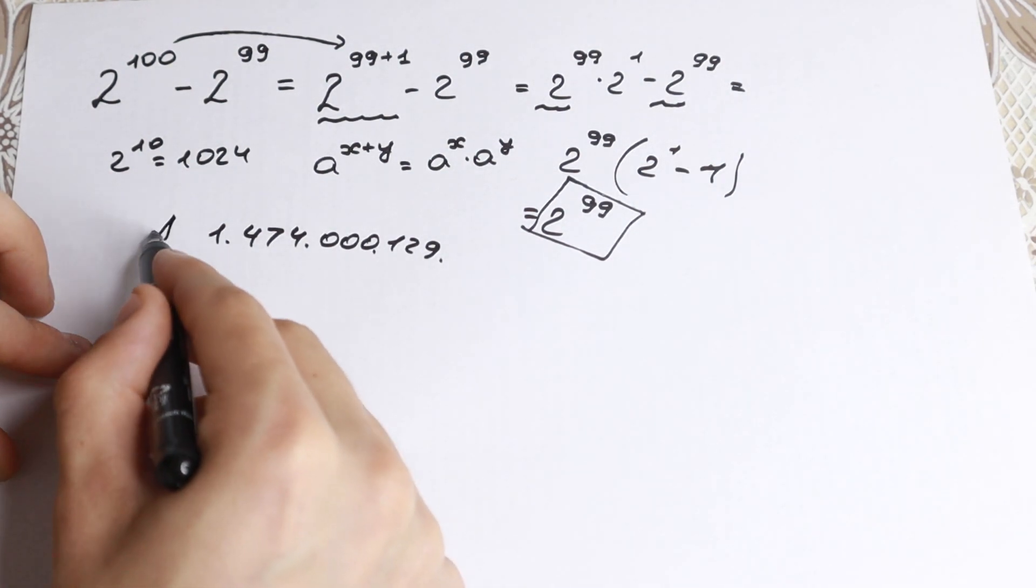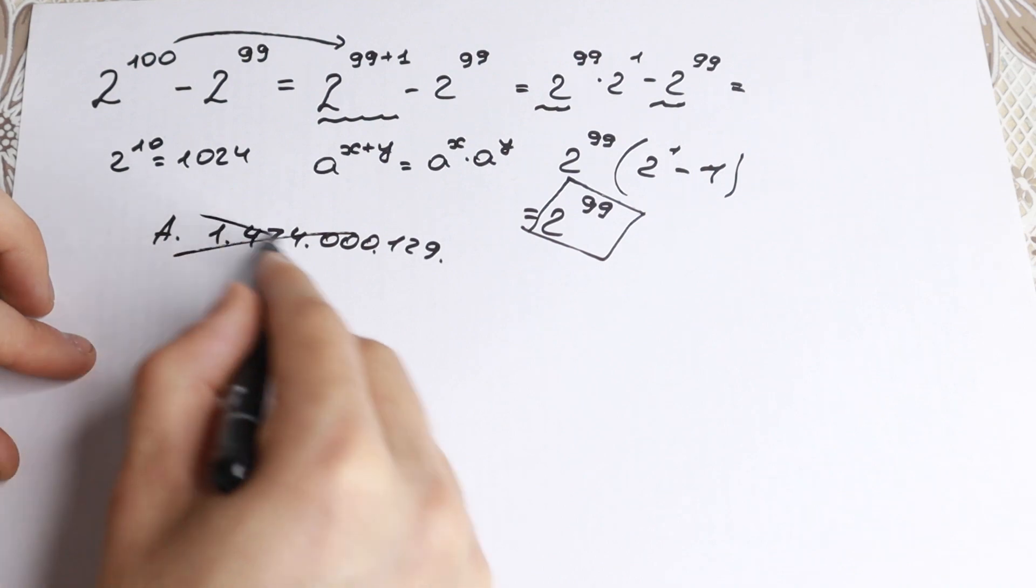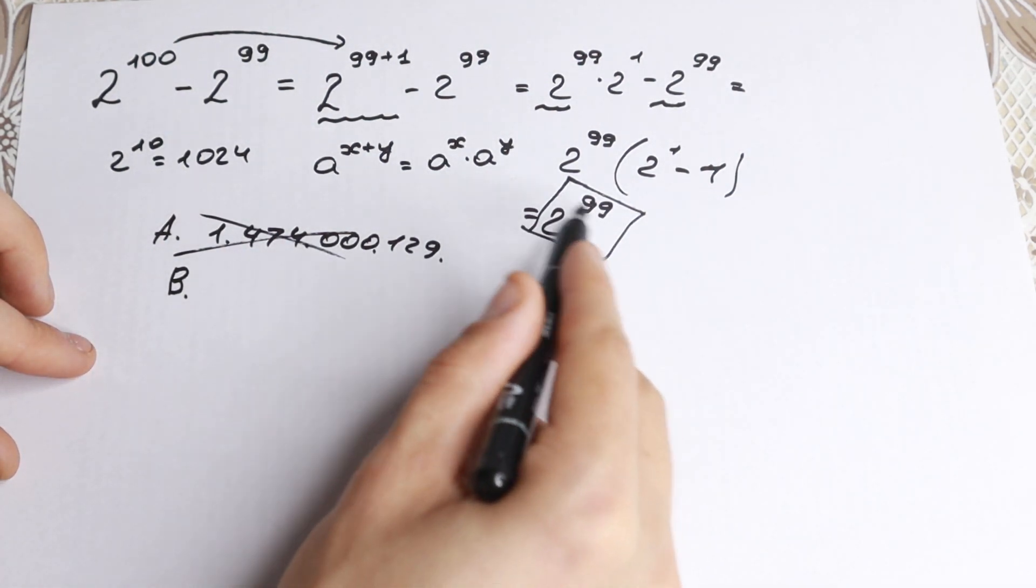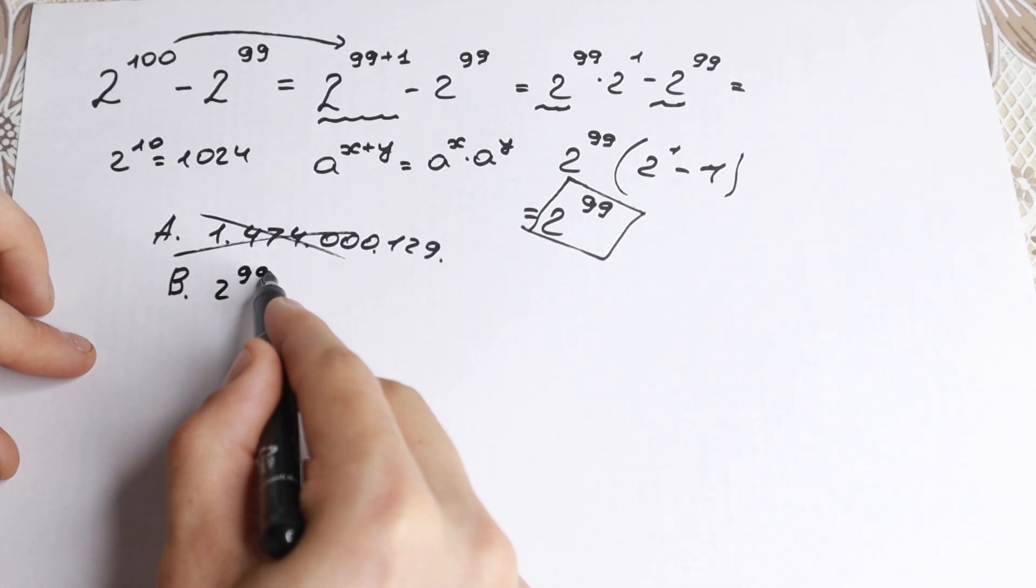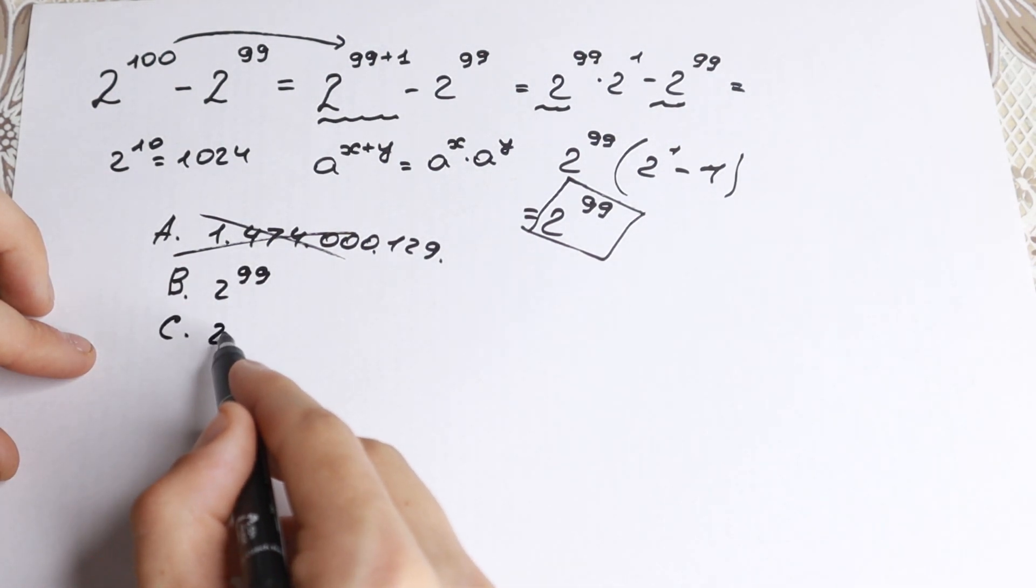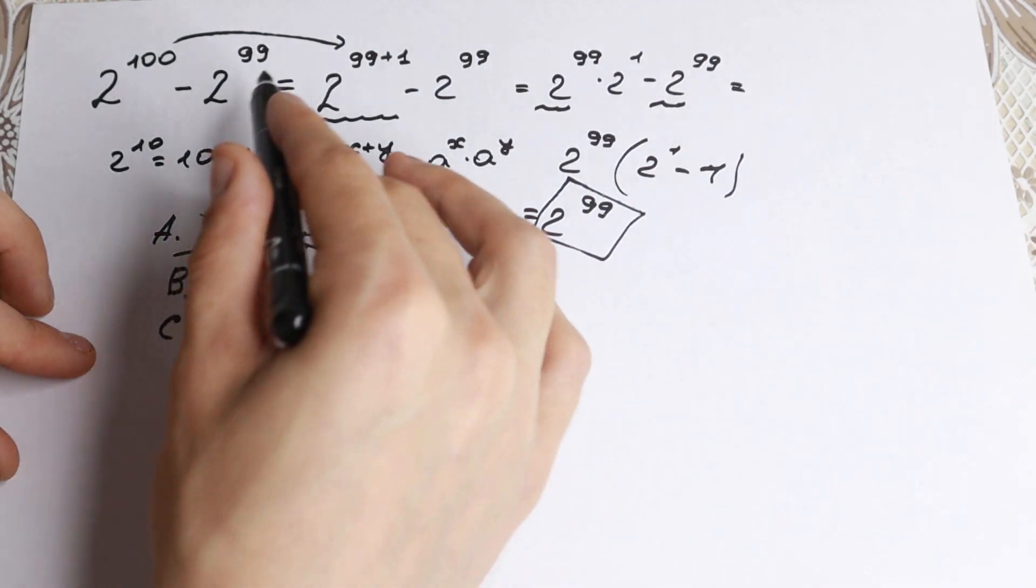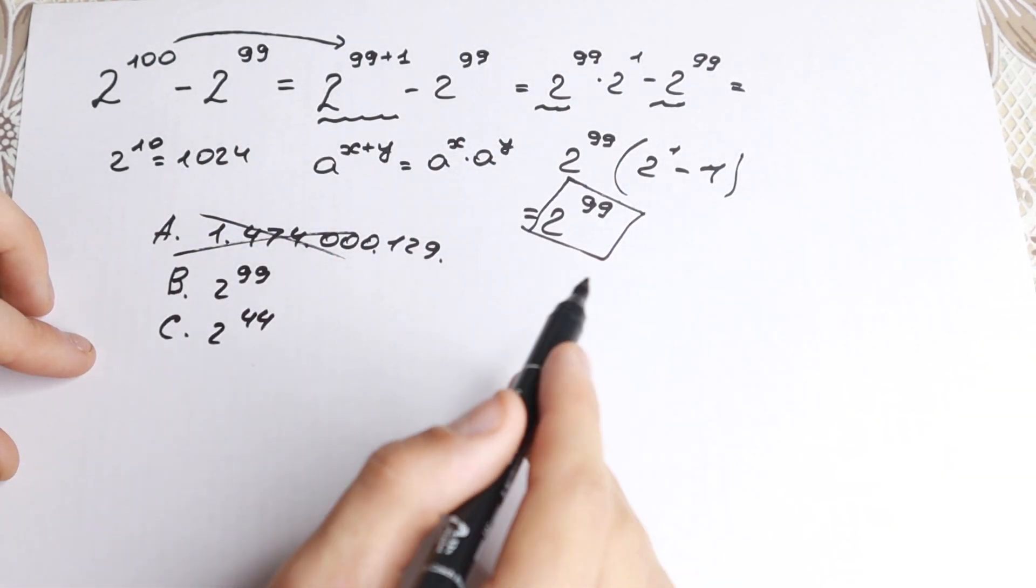You will need, for example, this is option a. You don't have this option because a lot of practice tests have like this option. So for example 2 to the 99, c is 2 to the power like 44, and a lot of this option that you can go with this method real easy, you can solve it.